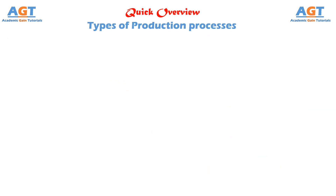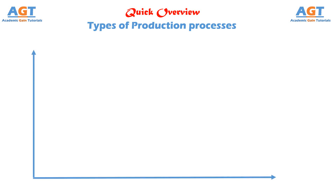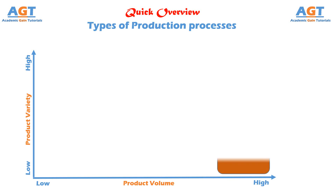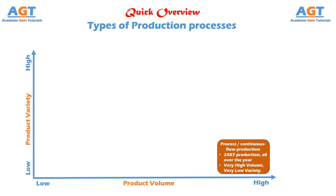Let's take a quick look at what we learned in this class. First, we classified production systems based on product variety and product volume. We discussed process production, or continuous flow production, where production keeps running continuously 24-7 all round the year. This process mainly uses automated machineries designed for one particular kind of job, producing very high volume of very low variety of product. Examples include petrochemical refineries, edible oil refineries, steel making, paper making, and beer brewing.